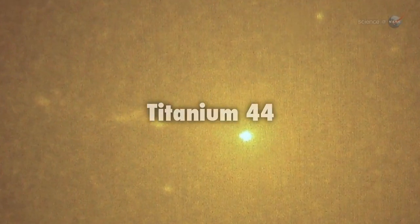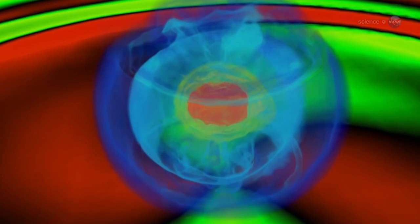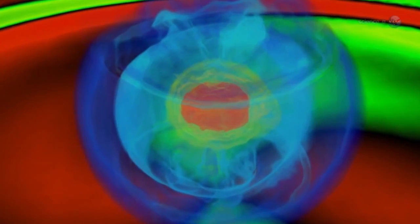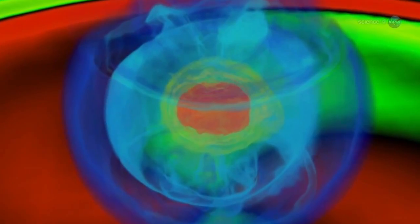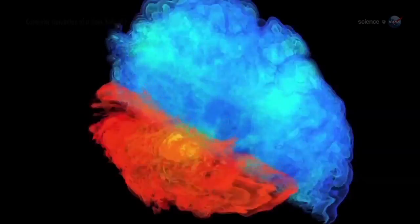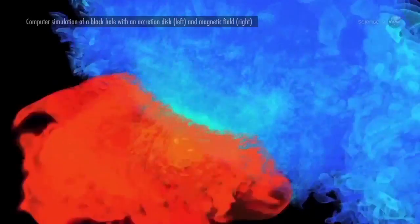An element of particular interest is Titanium-44. Creating this isotope of titanium through nuclear fusion requires a certain combination of energy, pressure, and raw materials. Inside the collapsing star, that combination occurs at a depth that's very special.